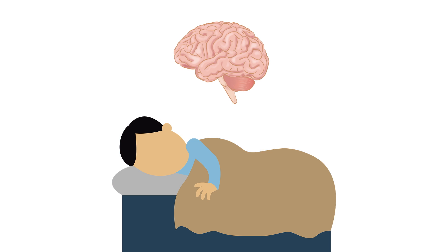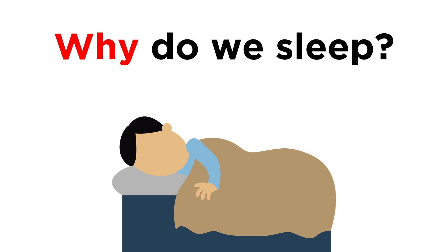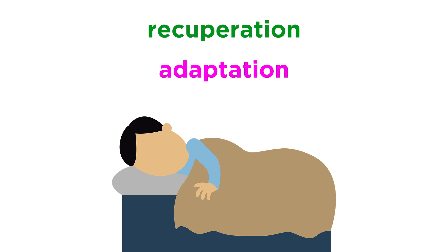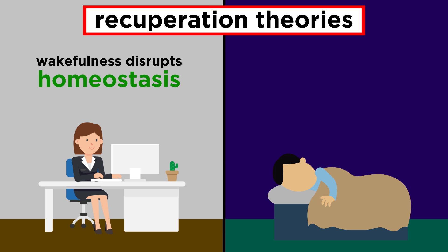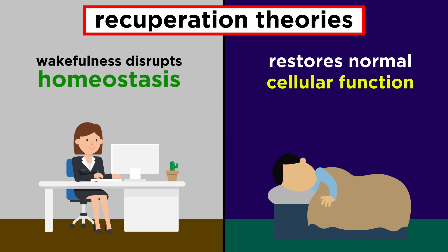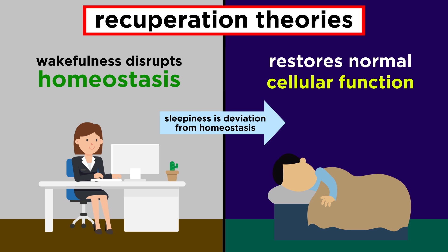Right now, let's quickly point out a few more key items regarding sleep and brain activity. Let's return to that fundamental question: why do we sleep? Most relevant theories focus on recuperation or adaptation. Recuperation theories propose that wakefulness disrupts homeostasis, and sleeping allows all the cells in the body to perform crucial tasks without the burden of servicing a thinking and moving organism. This would imply that sleepiness is triggered by a deviation from homeostasis, and once this is recovered, wakefulness resumes.